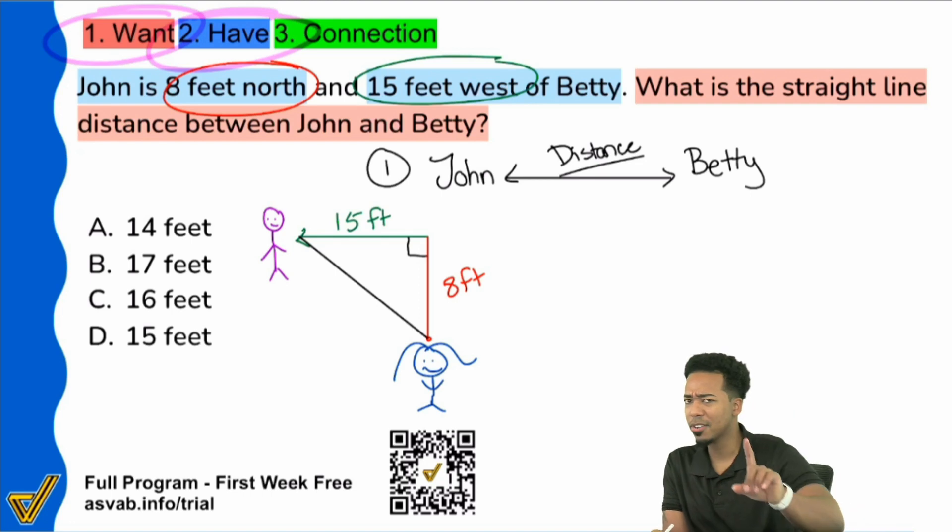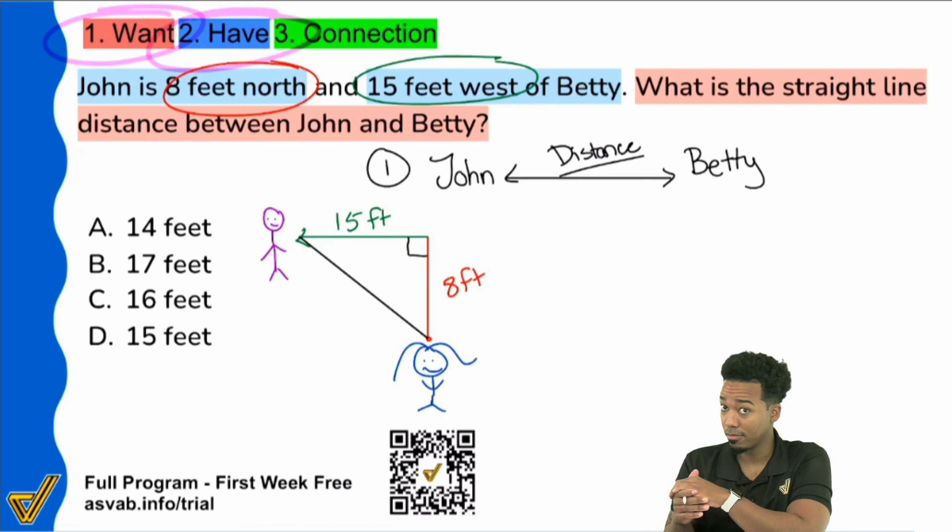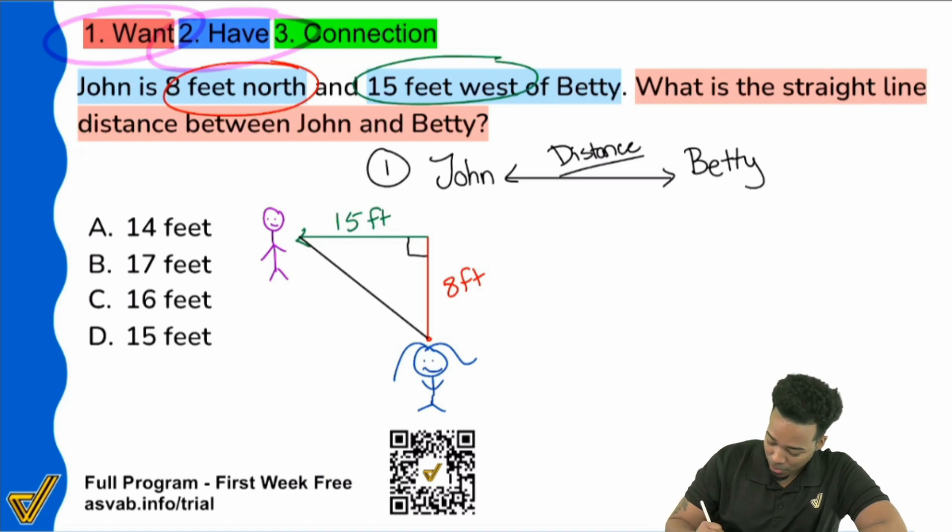Even if you didn't hear that, maybe you've heard of a squared plus b squared equals c squared. Maybe. Possibly. Right? That's what this is. That's exactly what this is.